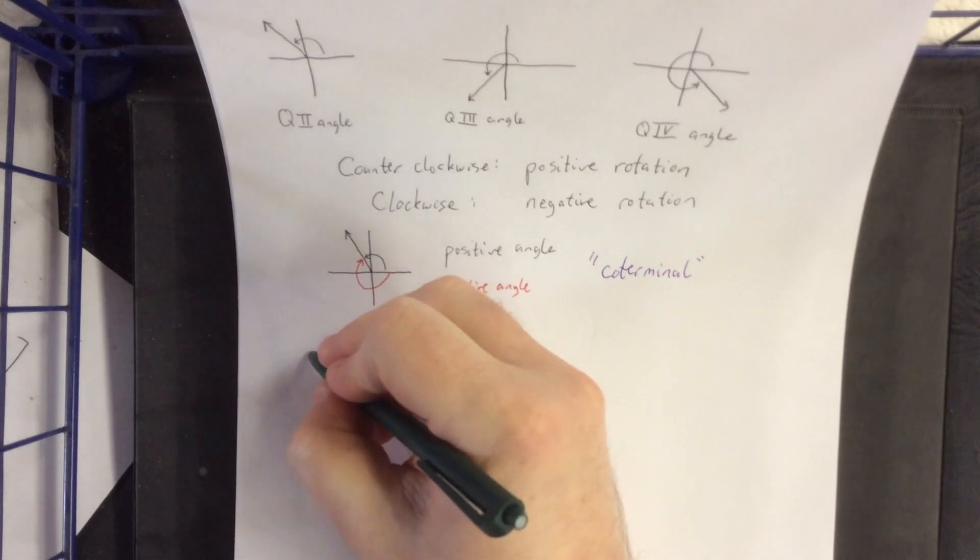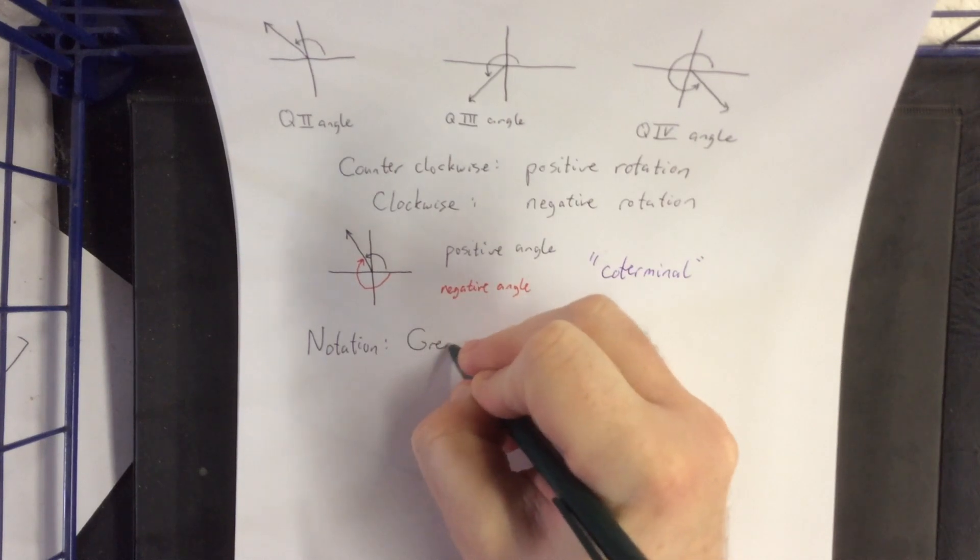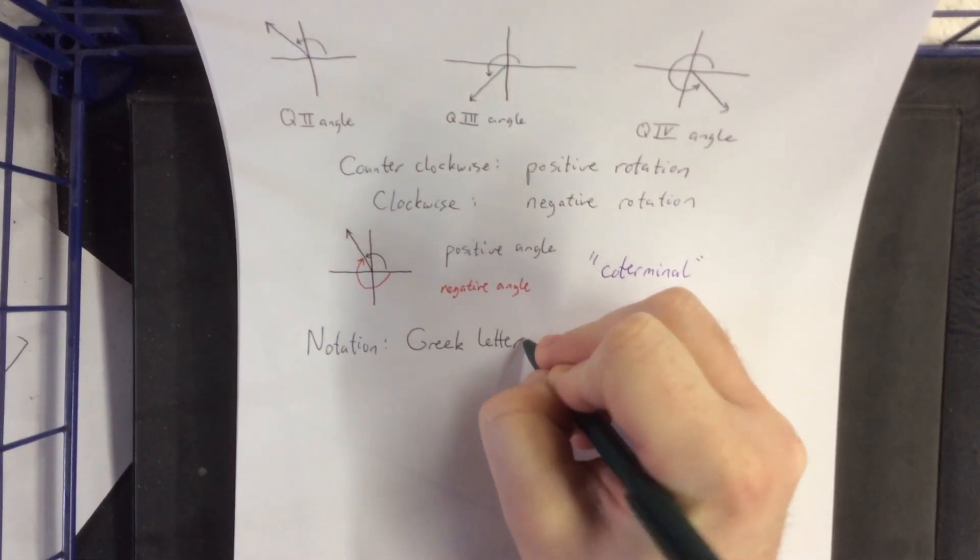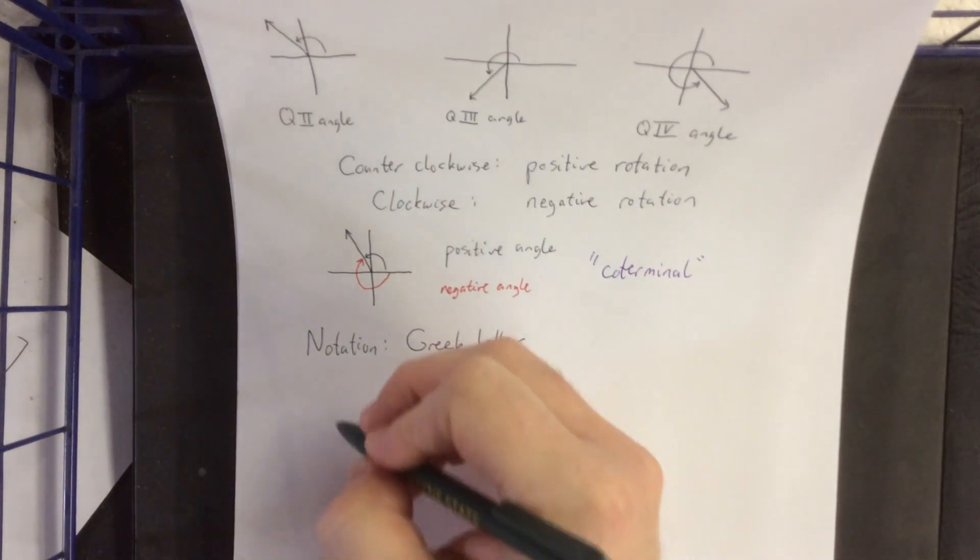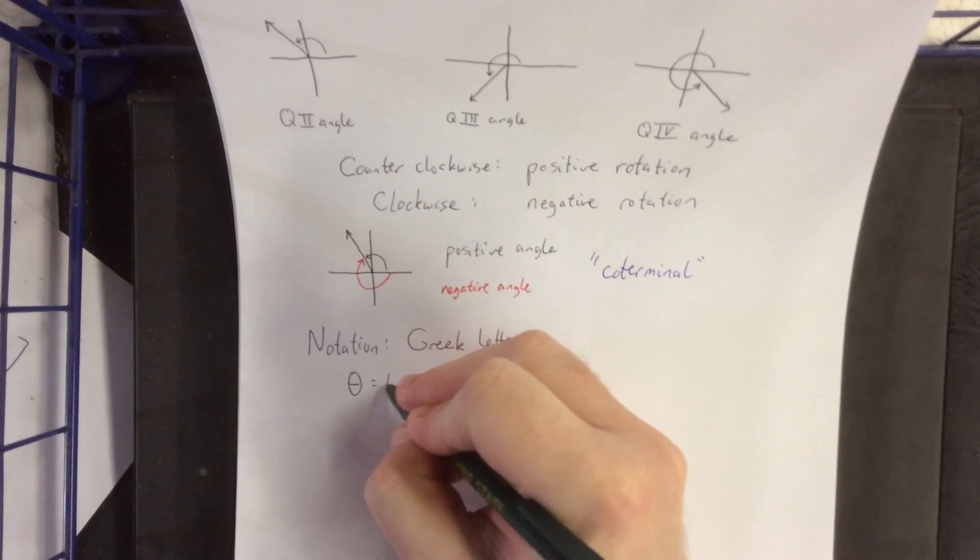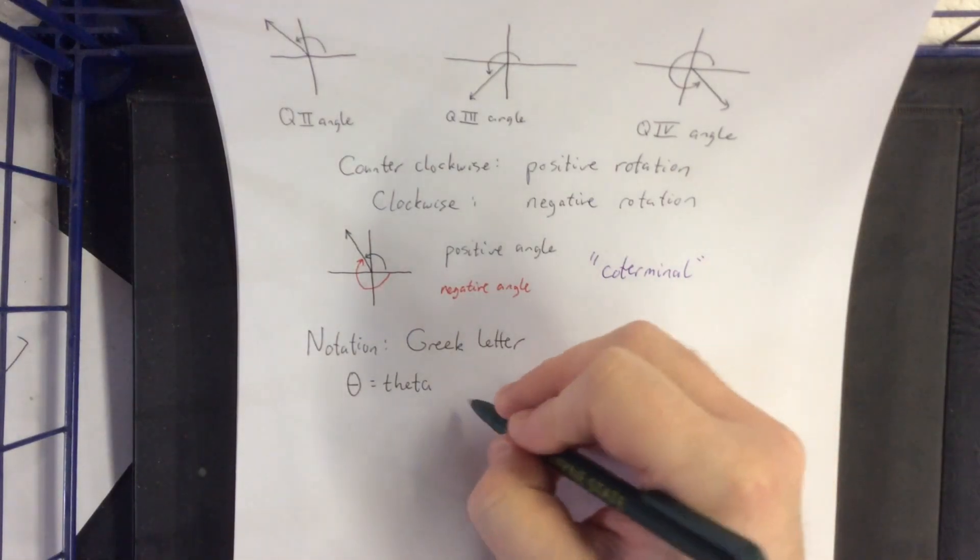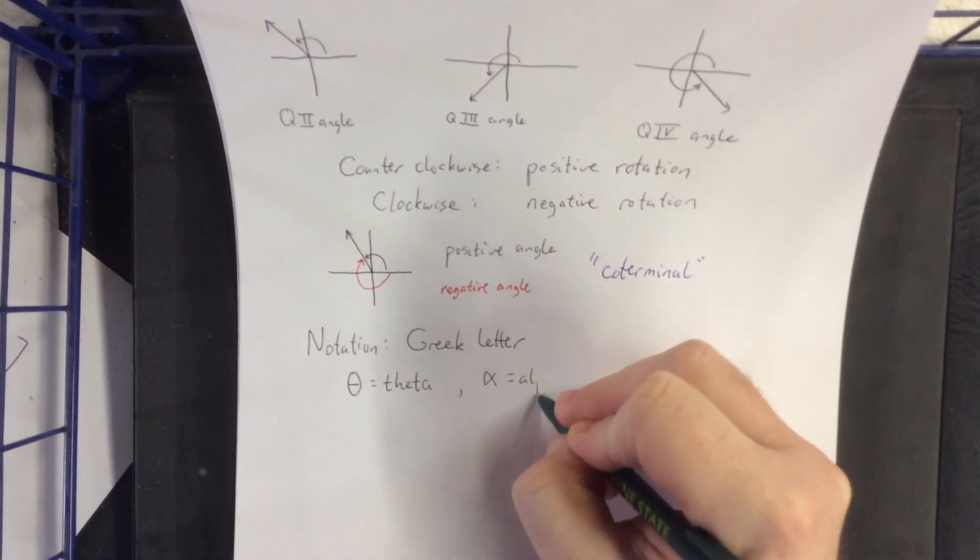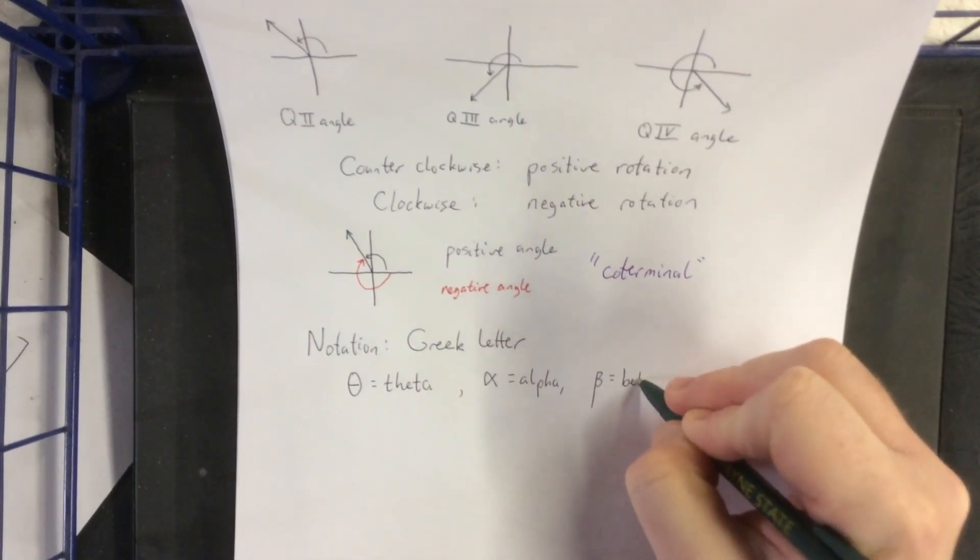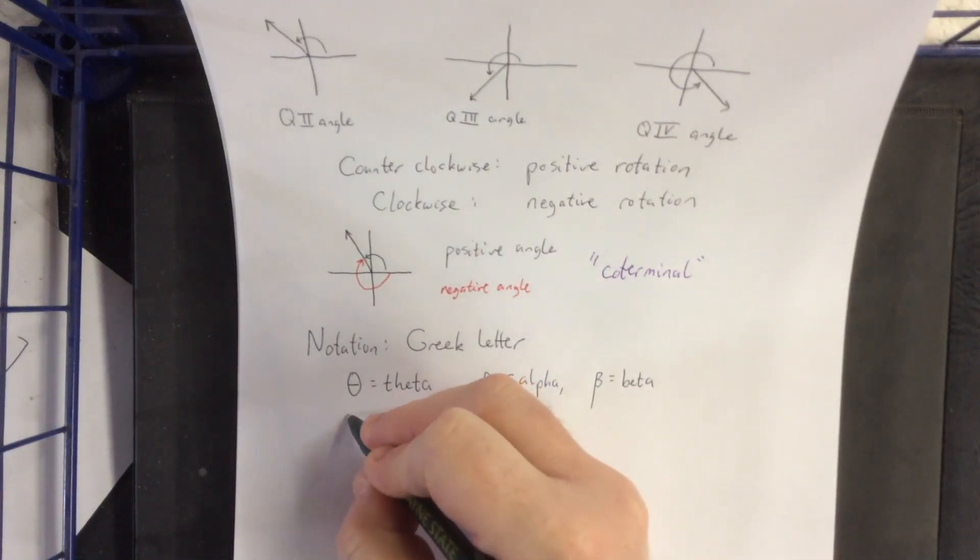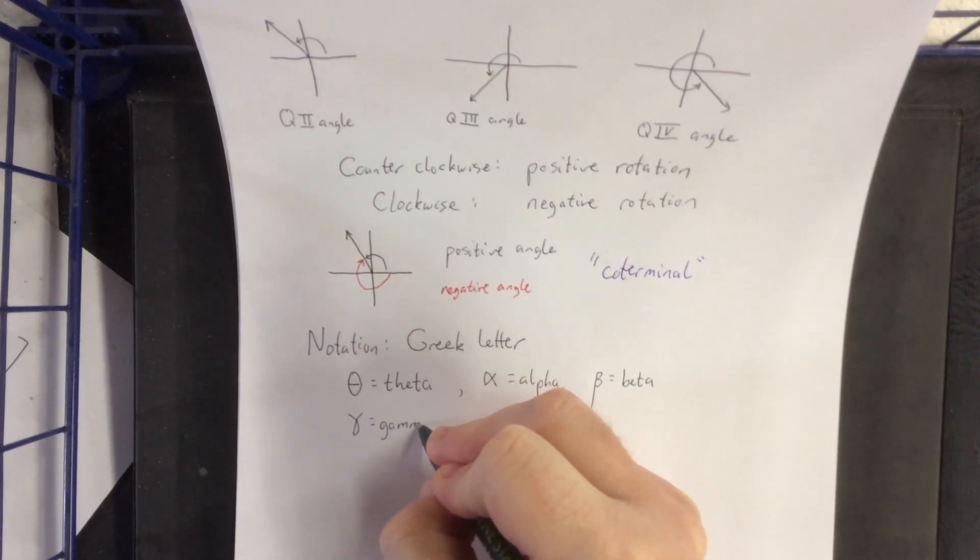The most common notation that we're going to be using for these angles is going to be a lowercase Greek letter. I wanted to familiarize you with some of the Greek letters that get used pretty frequently for these. I would say the most common Greek letter that you're going to see for an angle is going to be the Greek letter theta. Additionally, we could see things like alpha or beta. Eventually, when we start working with triangles, we're going to see three angles in those. So, we'll introduce the third Greek letter as well. It'll be gamma.